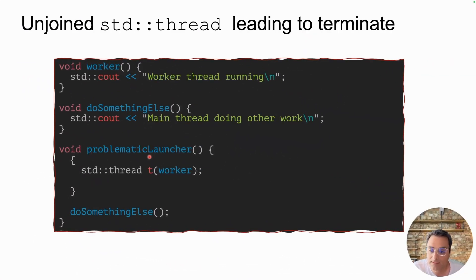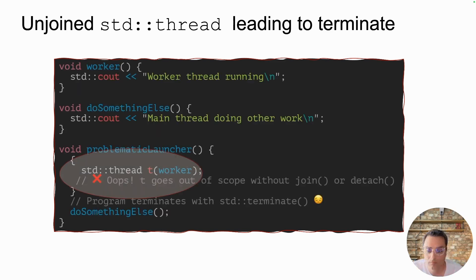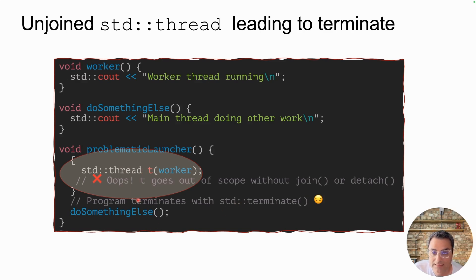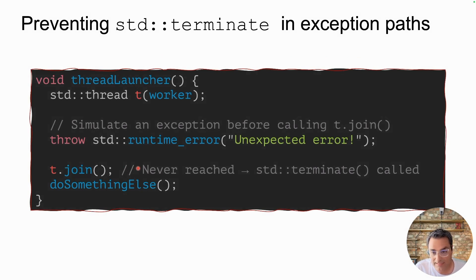Here is another example. I have this launcher thread which calls a worker — it creates an std::thread and passes the worker function to it. Notice that t is inside curly braces. Once we exit from these curly braces, t goes out of scope, and as a result, even if you wanted to call t.join later, because t is destructed, you will not be able to, and std::terminate will be called again. Here's another example where things can go wrong.